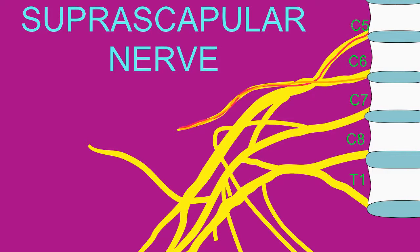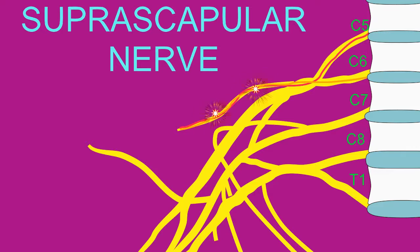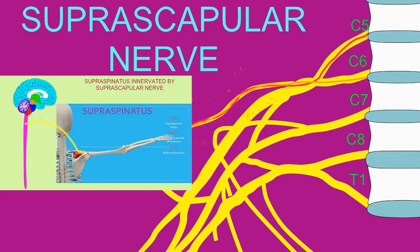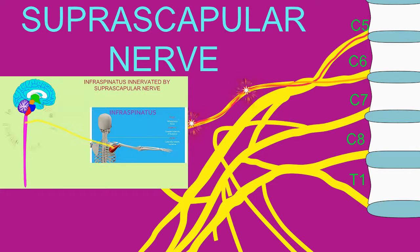The ventral rami of spinal nerves C5 and C6 enter the upper trunk of the brachial plexus, and just prior to the formation of the lateral cord of the brachial plexus, they branch off to form the suprascapular nerve, which innervates the supraspinatus muscle and the infraspinatus muscle.